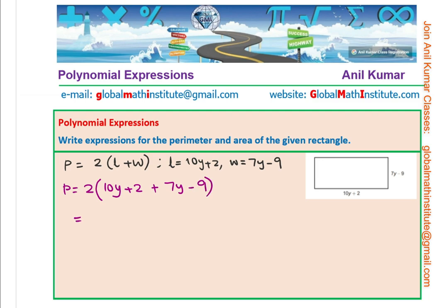Now, you can combine the like terms. 10y plus 7y is 17y and then minus 9 and 2 gives us minus 7. Now, we can apply the distributive property to open, multiplying each term with 2. So, if you do that, what do you get? You get 2 times 17 which is 34y minus 2 times 7 which is 14. Units will be like units. So, we get the perimeter of the rectangle.